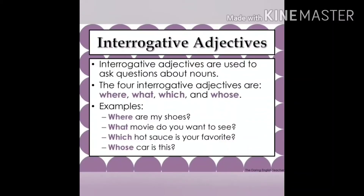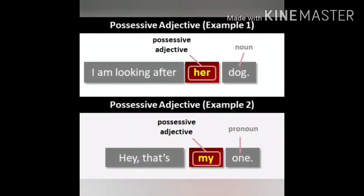Now we have possessive adjectives. Possessive means to show ownership. Possessive adjectives indicate ownership or possession and always come before the noun — they answer the question 'whose?' For example: 'dear children live in the USA,' 'her son is studying in Chennai,' 'my parents are arriving today.' The words 'dear,' 'her,' and 'my' are possessive adjectives, and you can see they are placed before the nouns 'children,' 'son,' and 'parents.'